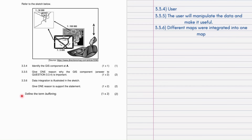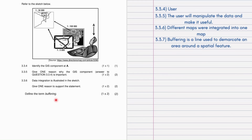The last question asks you to define the term buffering. As stated before, buffering is a line used to demarcate an area around a spatial feature. It's extremely simple — there's nothing too complicated about it.